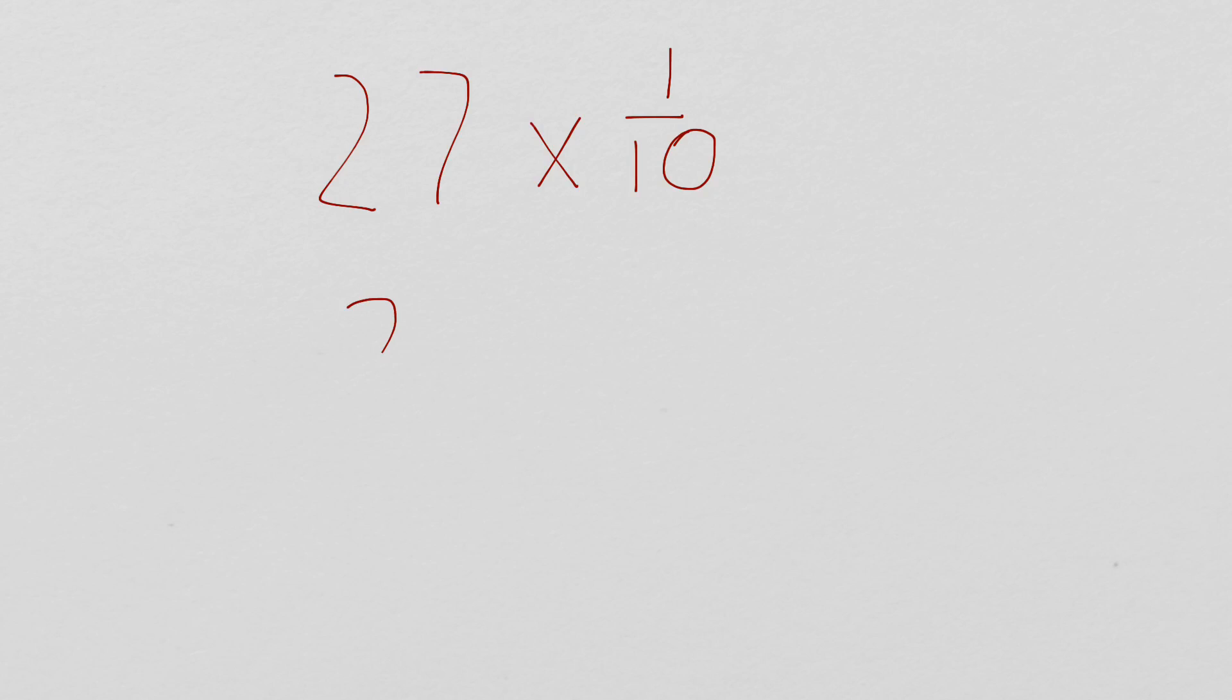27 is the same thing as 27 and 0 tenths, times 1 tenth. So, let's think about what happens here. When we multiply by 10, we move the decimal place to the right. What do you think is going to happen when we multiply by 1 tenth?